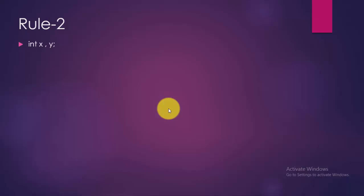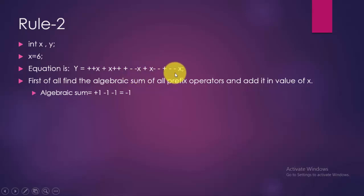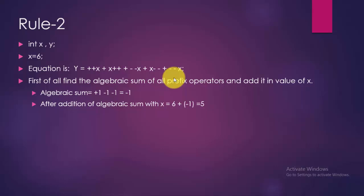Rule number 2. Let's learn this rule by example. We have two integer variables x and y, and x = 6. Our equation is y = ++x + x++ + --x + x-- + (-x). First, find the algebraic sum of all prefix operators and add it to the value of x. Here the algebraic sum is +1 - 1 = -1 (from ++x and --x). So x becomes 6 + (-1) = 5. Then put this value in all places of x in the equation: y = 5 + 5 + 5 + 5 + 5 = 25.